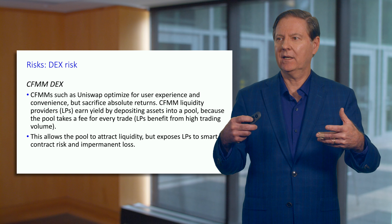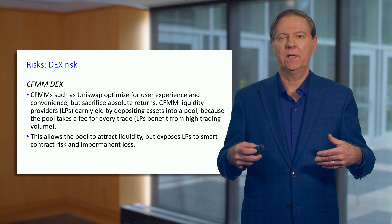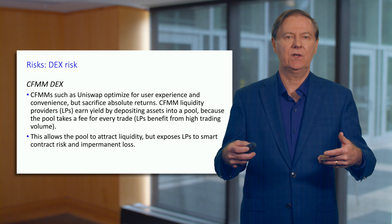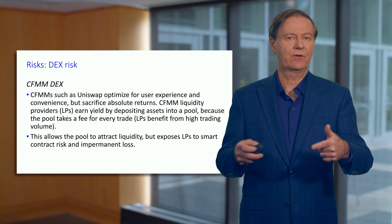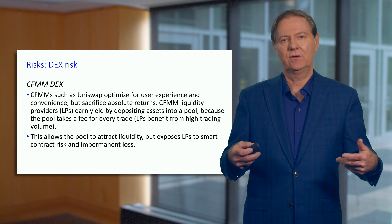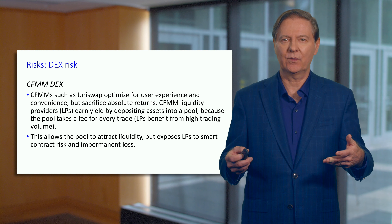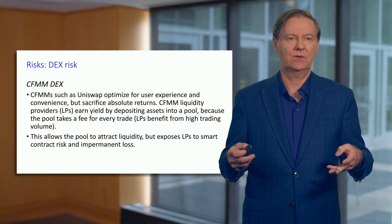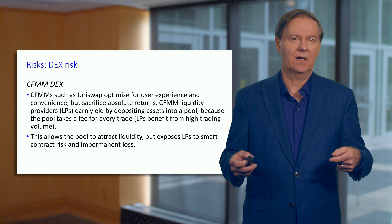We know some of the downsides of how these protocols work, like impermanent loss. If you allocate liquidity to a DEX, you earn a return based on transactions — for example, 30 basis points per transaction going into the pool as compensation. Liquidity is also an issue: insufficient liquidity can lead to very large slippage and potentially very large impermanent loss.